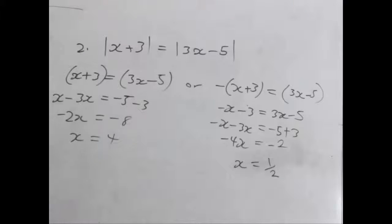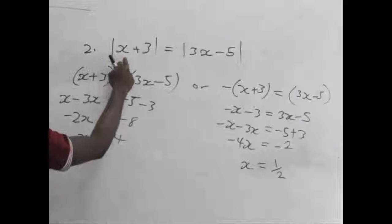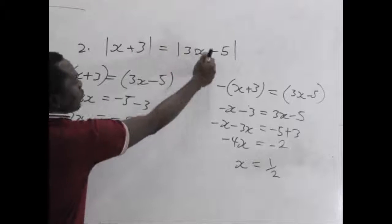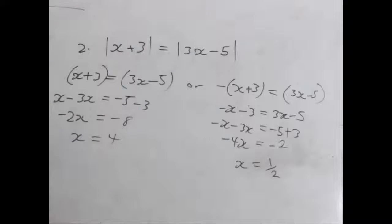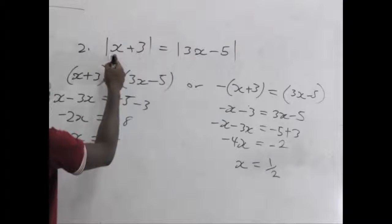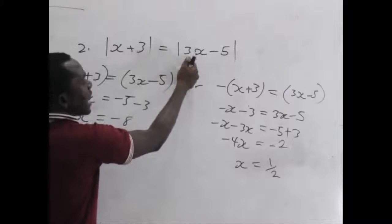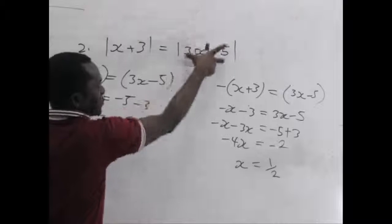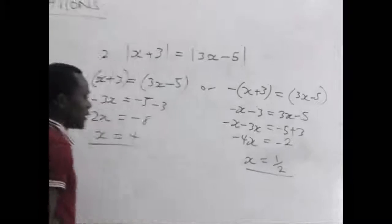Let's verify both solution sets. Placing x equals 4: on the left we get 7, and on the right, 4 times 3 is 12, minus 5 is 7 — they are the same. Using x equals one half: placing one half gives three halves on the left, and on the right three halves minus 5 gives negative three halves, but the absolute value sign makes it positive three halves — they are equal. So these are our two solution sets.